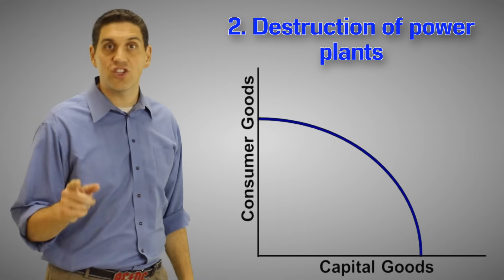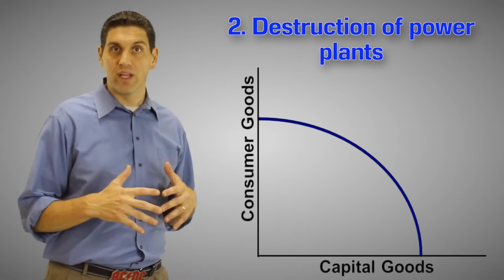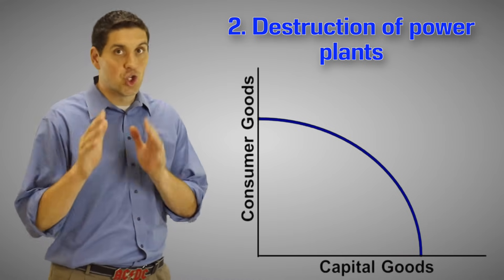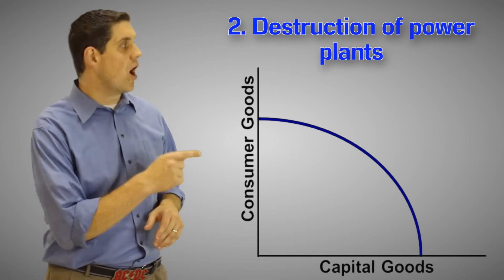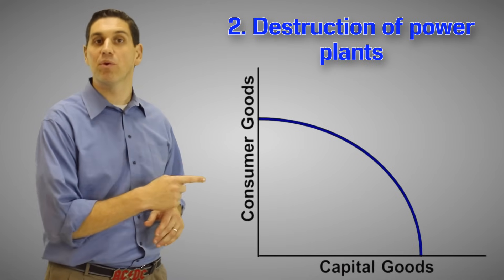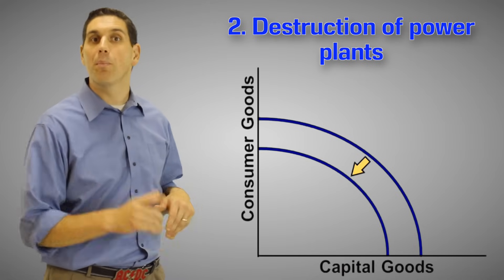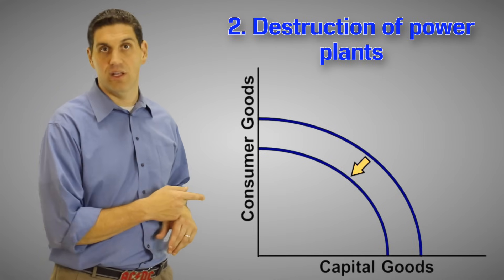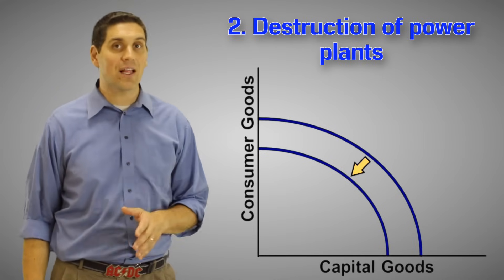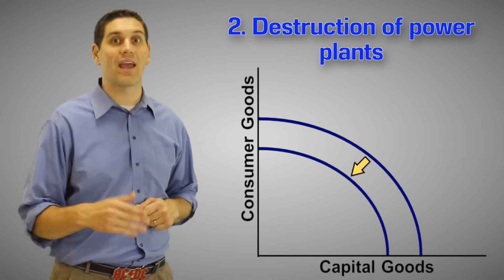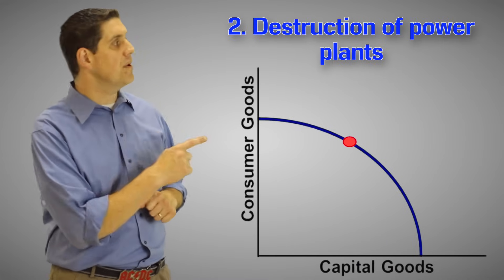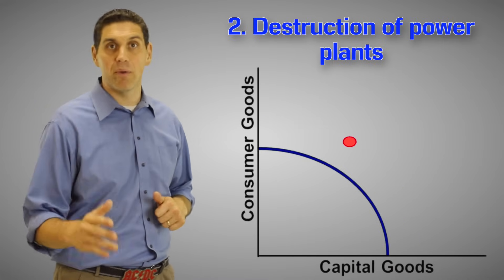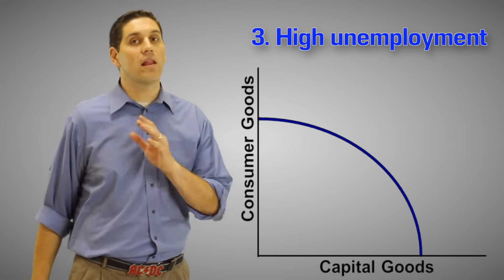For number two, a destruction of power plants would mean we have less resources — in this case electricity — which is super important for an economy, and that would cause the production possibilities curve to shift inward. We produce less consumer goods and less capital goods. That's exactly what happened to Japan when there was the earthquake and the tsunami. The combination that was efficient became impossible because the resources were destroyed.